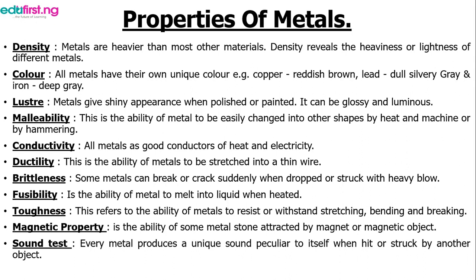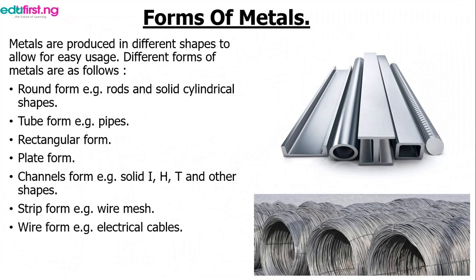Ductility is the ability of metals to be stretched into thin strands, just like wire. Brittleness is the ability of metals to crack suddenly under a heavy blow. Fusibility is the ability of metals to melt when heated. Toughness is the ability of metals to resist stretching, bending, and breaking. As for the magnetic property, ferrous metals are attracted to magnets, but non-ferrous metals are not. There is also the sound test — metals have a unique sound when struck with another object. Metals come in different forms: round, tube, rectangular, plate, channel, strip, and wire.